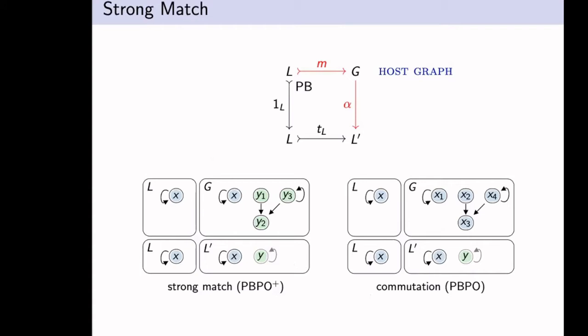The main point in which PBPO+ differs from PBPO, and I would say the only essential point, is the matching mechanism. What we try to do is, for host graph G, we try to sandwich it in between the graphs L and L'. So we try to find an occurrence of L in G through morphism M, which is monic. And then we want G to be an instance of L', which is the morphism alpha which witnesses this. And then moreover, for the strong match, we require that the pullback of alpha along TL gives back L. The idea is then that we don't just have commutation, but strong matching expresses that you're not allowed to collapse this context onto parts of the pattern.